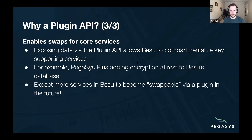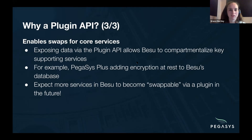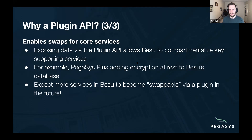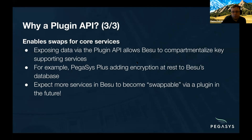Hundreds per second is probably the right order of magnitude, and that's in a permission network setting, not public mainnet. Hundreds per second gets you into low millions per day — you only need to sustain 12 per second to hit a million per day, and mainnet is already doing that.